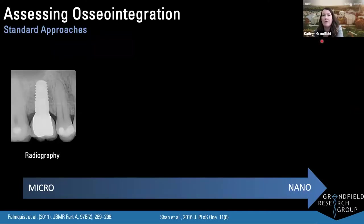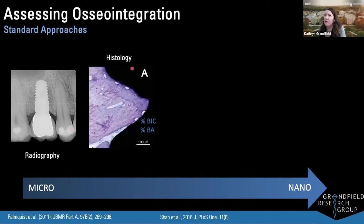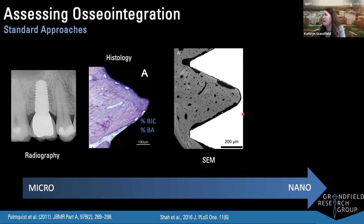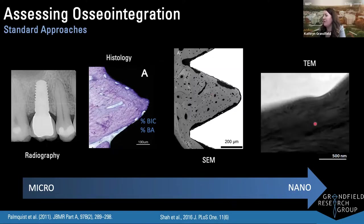Standard approaches for assessing the bone-implant interface include radiography or X-ray for clinicians, and histology in the lab — an optical microscopy technique where we can see stained bone tissue in contact with the implant and measure the amount of bone contact. Moving to smaller length scales requires electron microscopy, such as scanning electron microscopy or TEM imaging. But all of these have a major drawback: they're two-dimensional imaging techniques, and we know bone is a really complex three-dimensional structure.